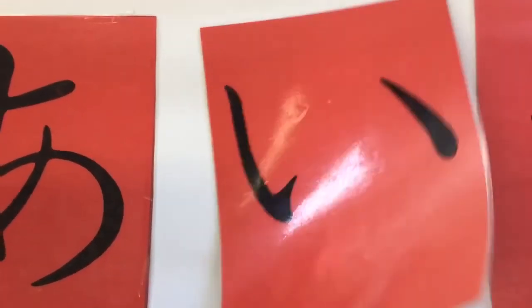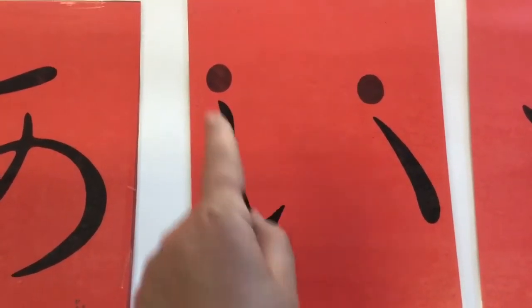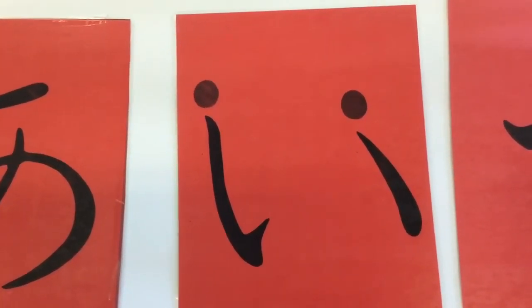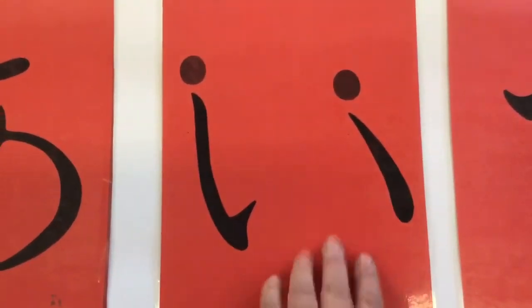This is I. A way to remember this one is it looks like an I in English. What sound does I make? I, like insect or invent or ink or Indian.